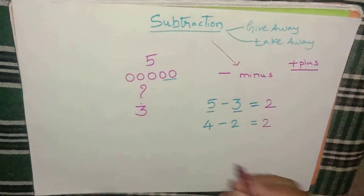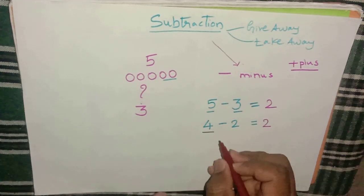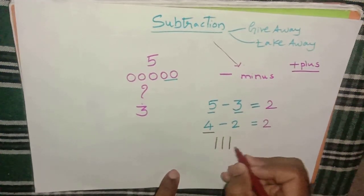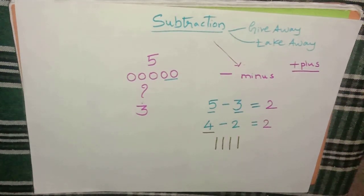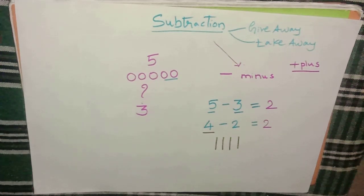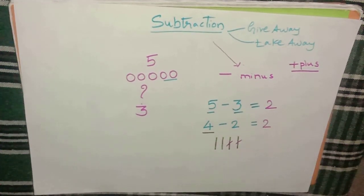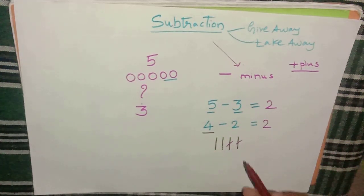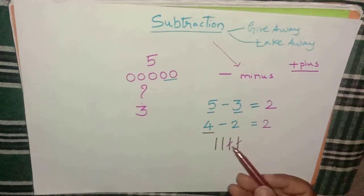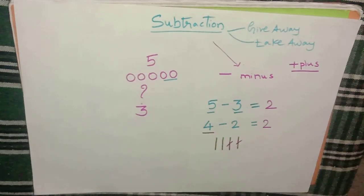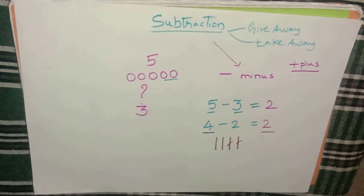Now with the help of lines: the first number is four, so draw four lines — one, two, three, four. You have to minus two, so in these four lines cancel two lines: one line and one more line. The uncancelled lines are the answer. Count them: one, two. We got the answer as two.